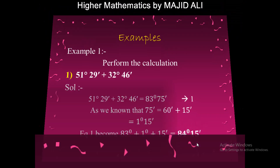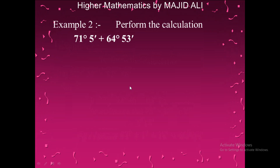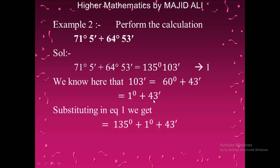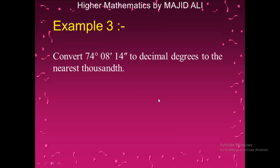Example 2: 71 degrees 5 minutes plus 64 degrees 53 minutes. Adding gives 135 degrees 103 minutes. Factorizing 103 minutes as 60 minutes plus 43 minutes, and substituting 60 minutes equals 1 degree, we get the solution: 136 degrees 43 minutes.